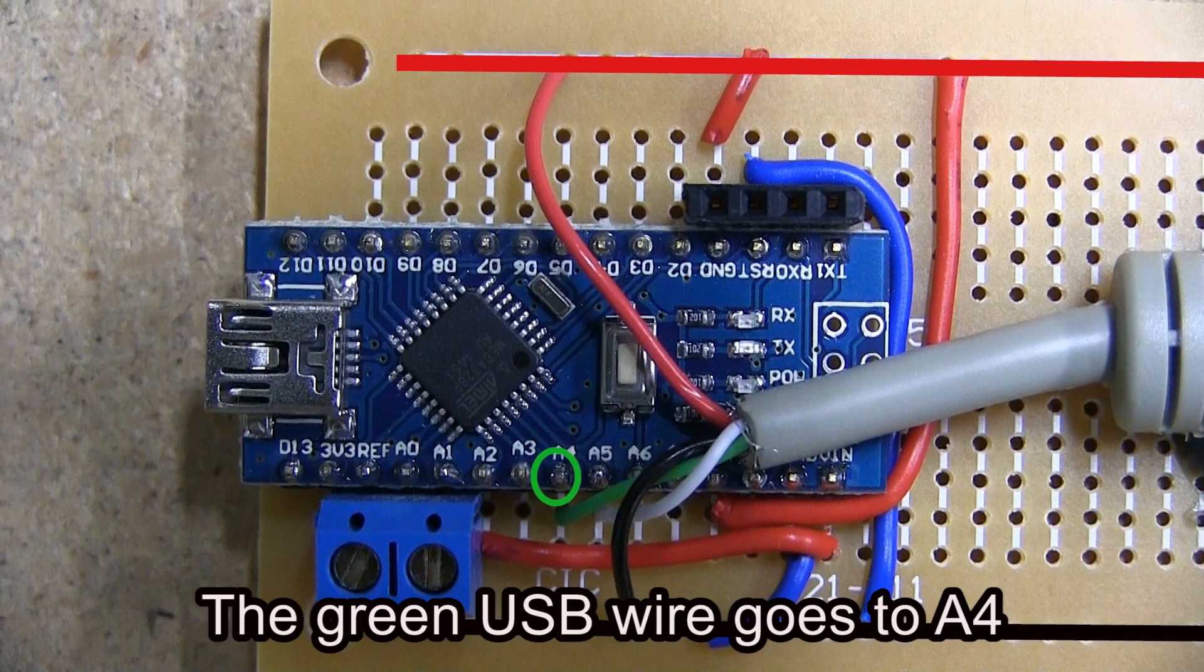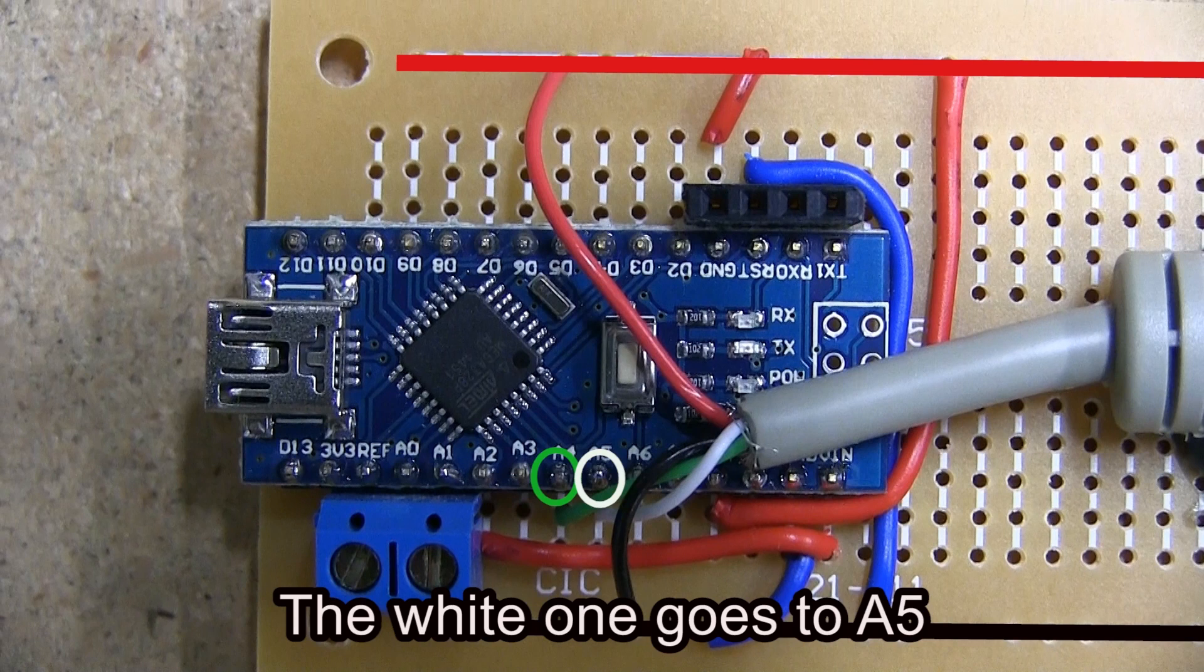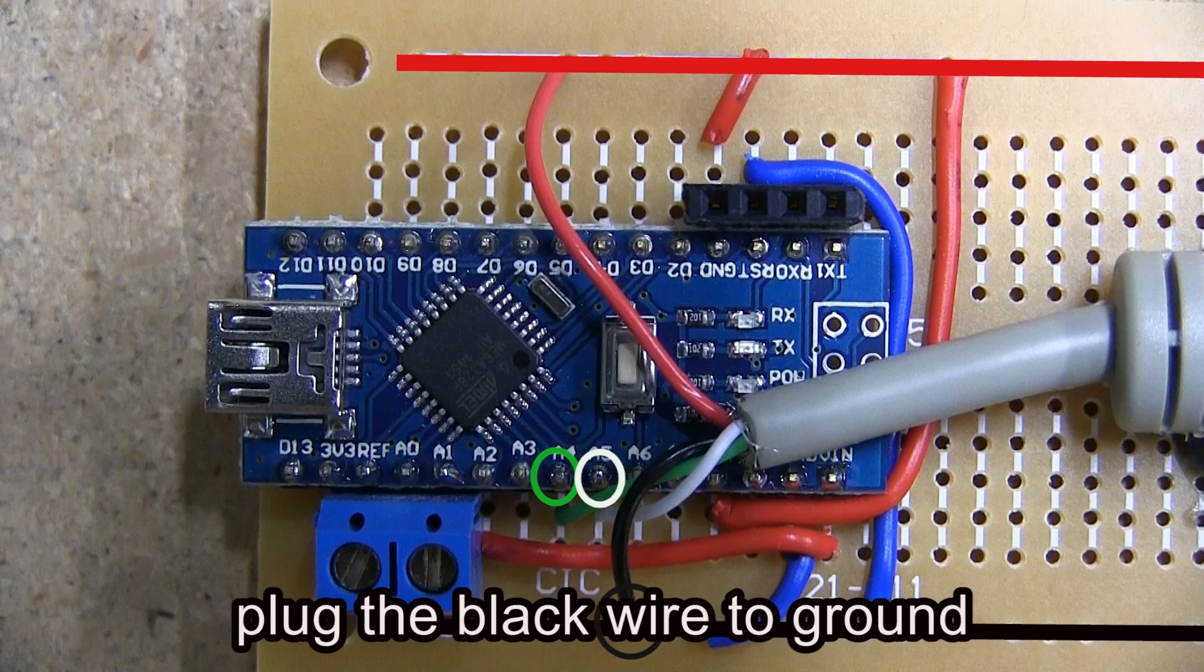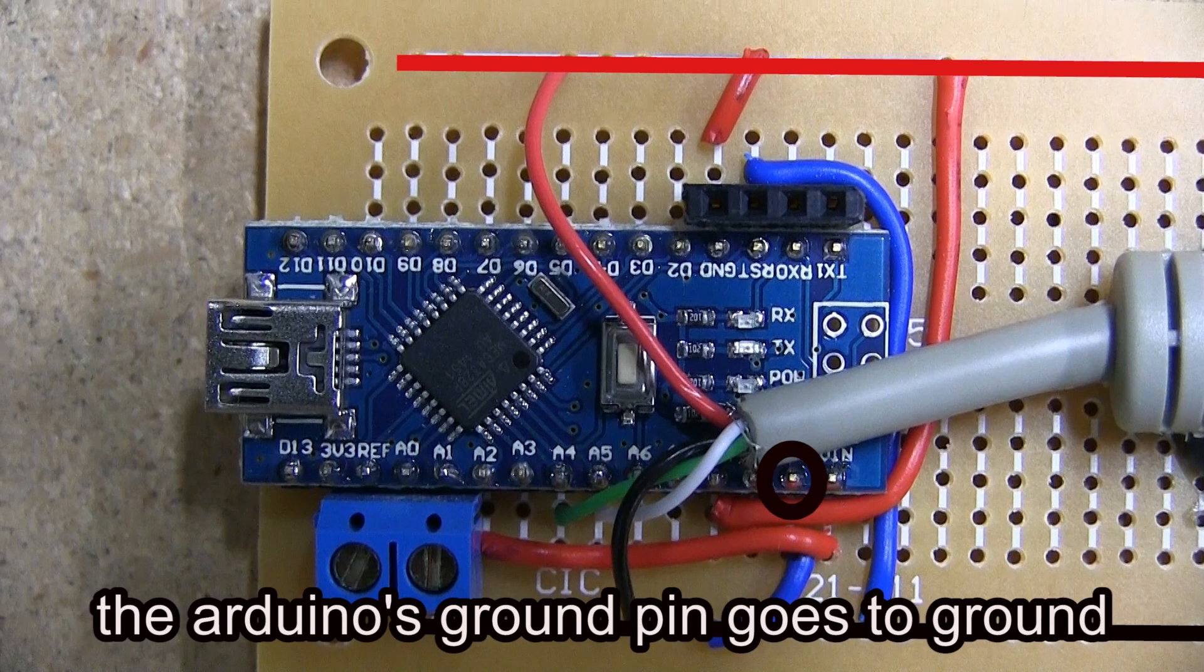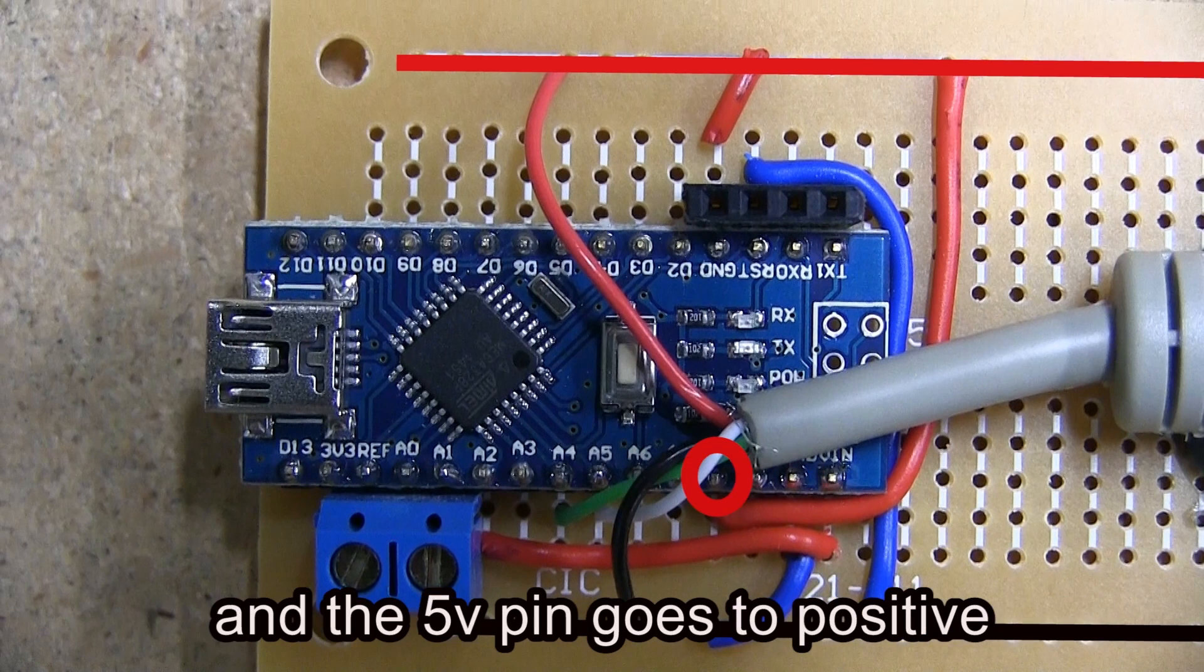The green USB wire goes to A4, the white one goes to A5. Plug the black wire to ground and the red one to 5V. The Arduino's ground pin goes to ground and the 5V pin goes to positive.